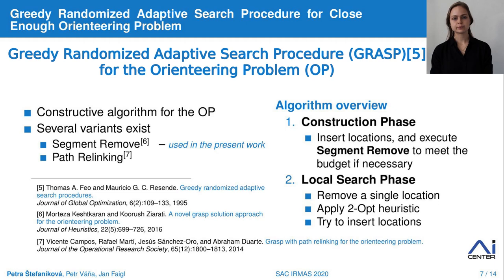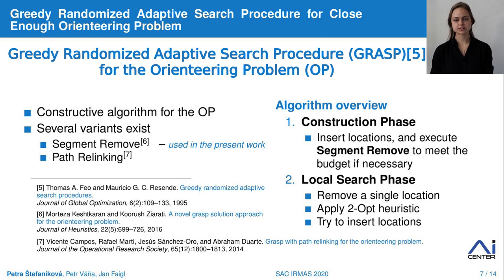In this paper, we want to address the drawbacks of the two previously mentioned methods. GSOA is unable to escape the local extreme, and VNS is very computationally demanding if we want to find a high-quality solution. Therefore, we utilize the Greedy Randomized Adaptive Search Procedure (GRASP), which is also one of the construction meta-heuristics and was already used for the OP. This method contains two parts: in the construction phase, locations are inserted in the path until the travel budget is reached, and the current path is further improved in the local search phase. The main benefit is that both phases try to escape local optima while computational time is comparable to GSOA. Note that several implementations exist, such as segment remove — utilized in this paper — or path relinking.